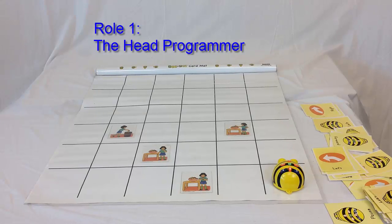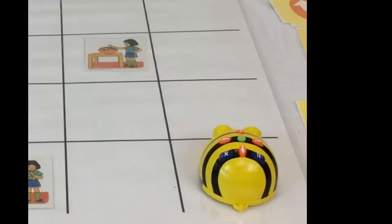The head programmer makes decisions about what the robot will do next. Most of these puzzles have multiple solutions. This robot could begin by turning left, going forward, and then turning right,